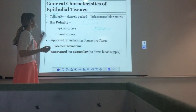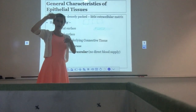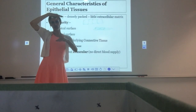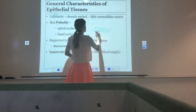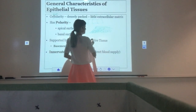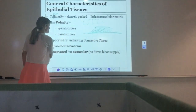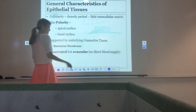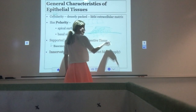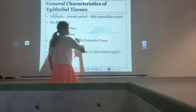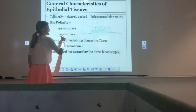Epithelial tissue also displays polarity — two different sides. One side of the tissue is very different from the other, because it lines an open surface. The skin, for example, has lots of layers of cells, and at the very bottom there's a membrane called the basement membrane, which connects it to the connective tissue underneath. So below we have connective tissue supporting it, connected by the basement membrane.